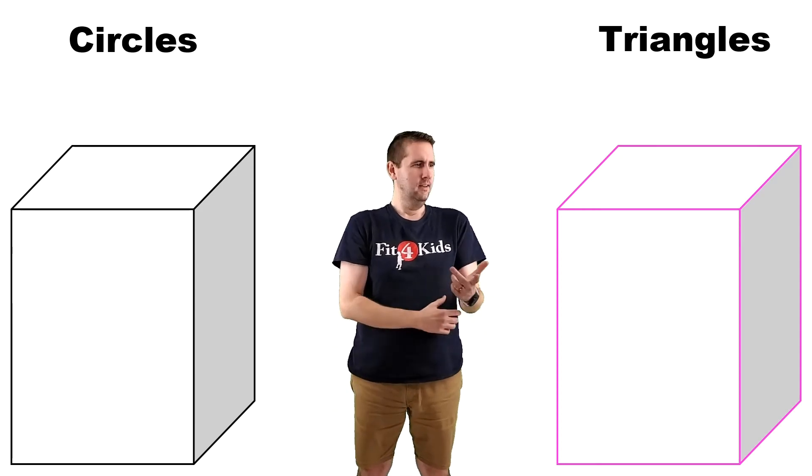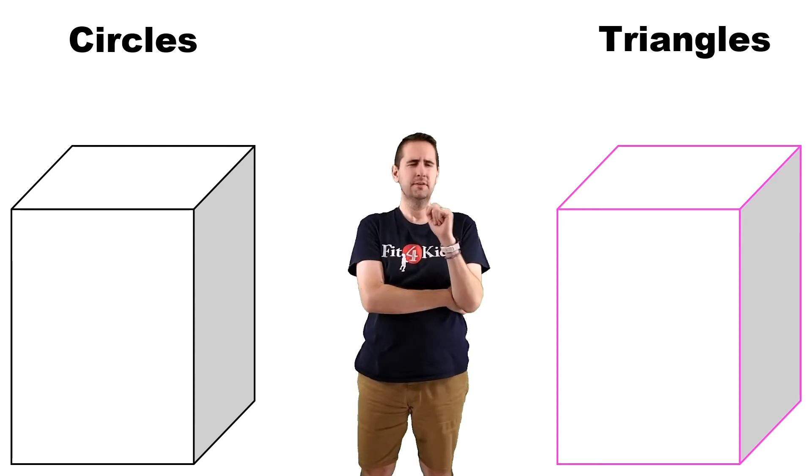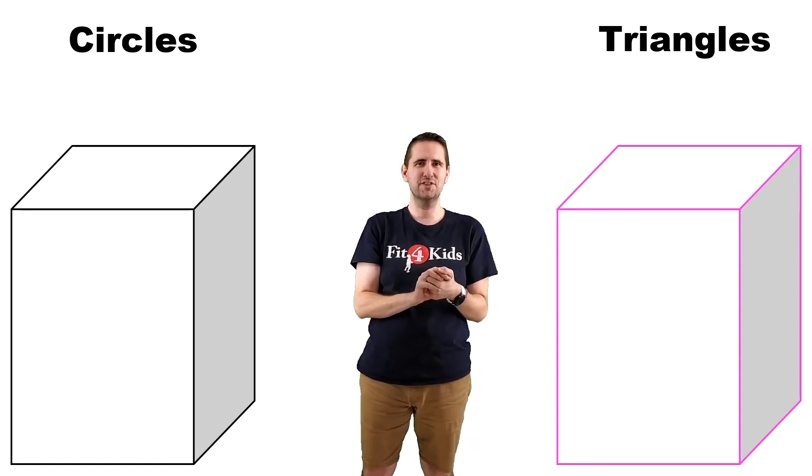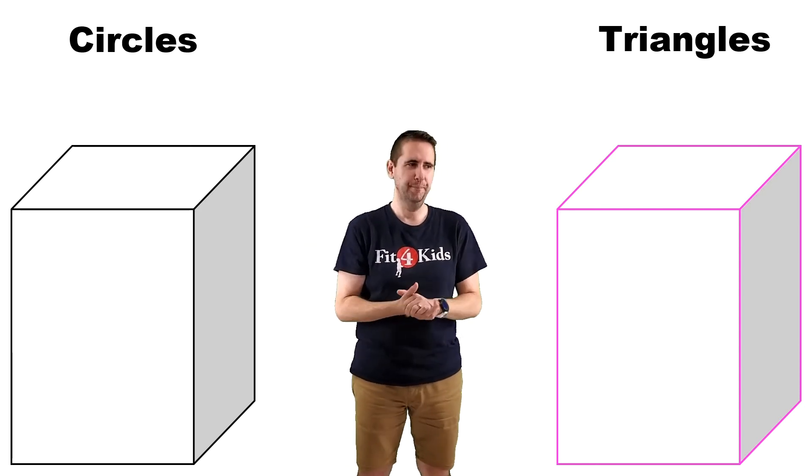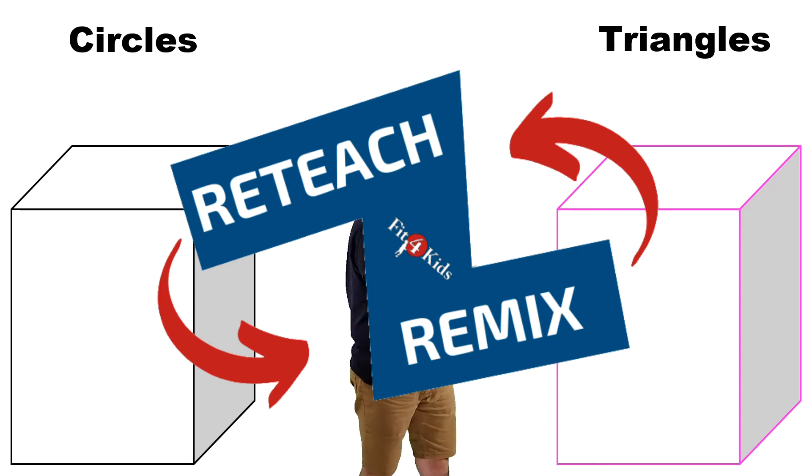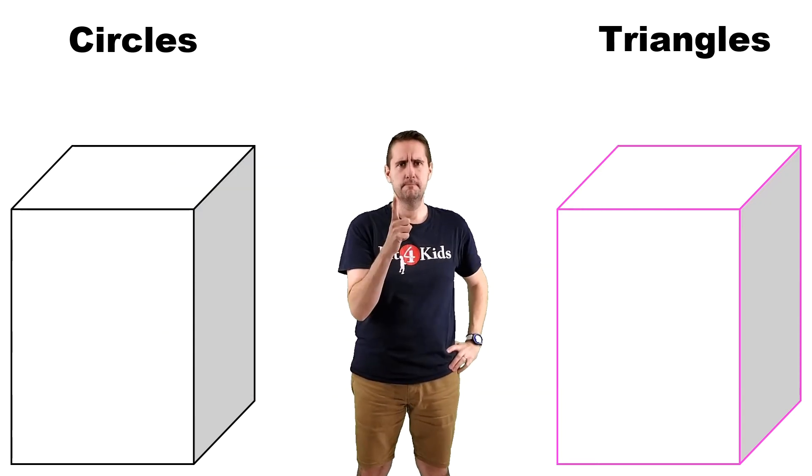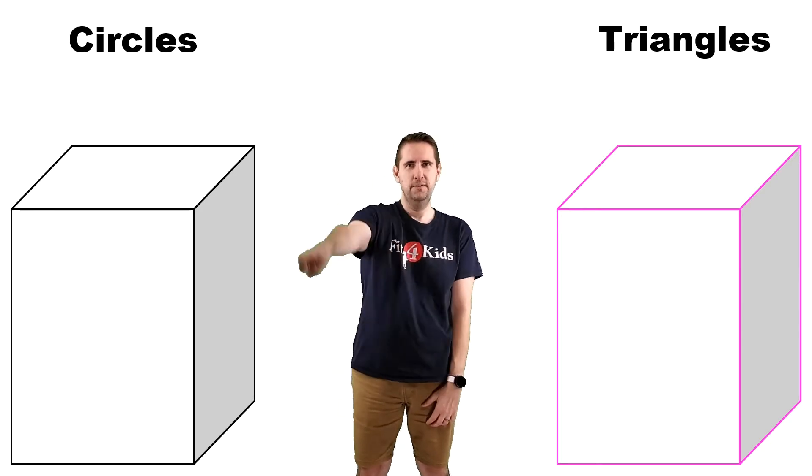Hey. That one over there says triangles. There's a pink box underneath it. Over here, that word is circles. And there's a black box outlined underneath it. First, can you draw a circle in the air with your pointer finger? No, not like that. Like a big circle. There you go. That's the shape of a circle.